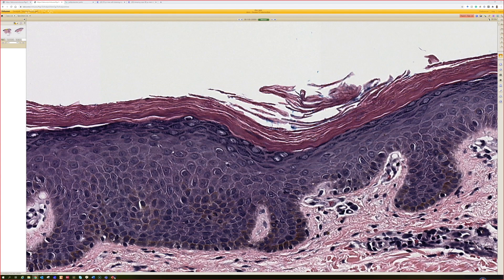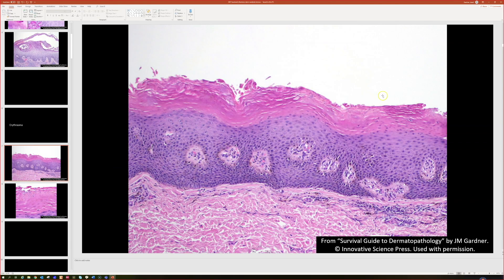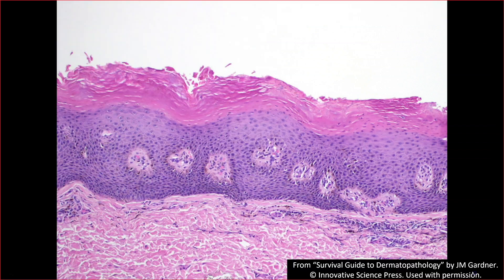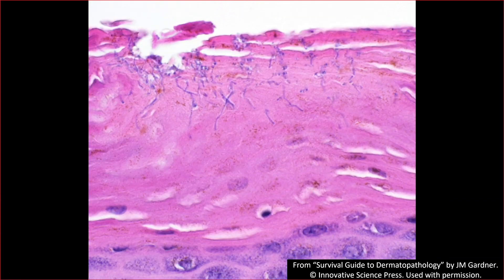Here's an example of erythrasma. Again, the compact ortho — sometimes there's a bit of spongiosis, sometimes a bit of pigment dropout and a little inflammation, but oftentimes, just like that case with the virtual slide, totally devoid of inflammation.